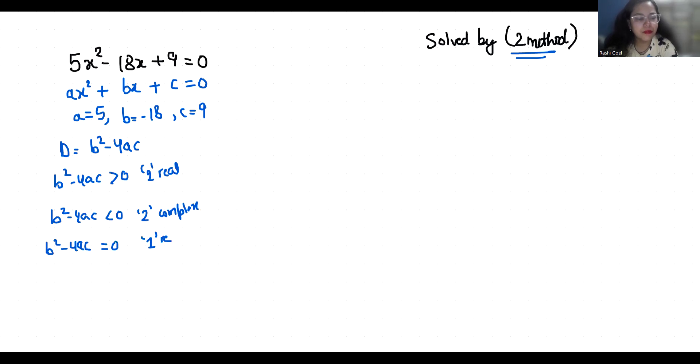Let's find out. Value of b is -18 square minus 4 times a that is 5 and c is 9. The -18 square is 324 minus 4 times 5 is 20 times 9 is 180, and value subtracted 144 which is positive, greater than 0.